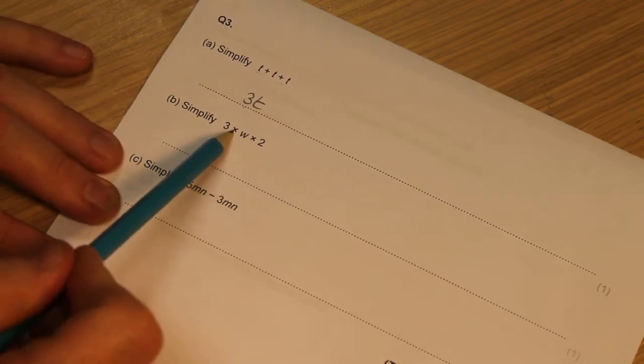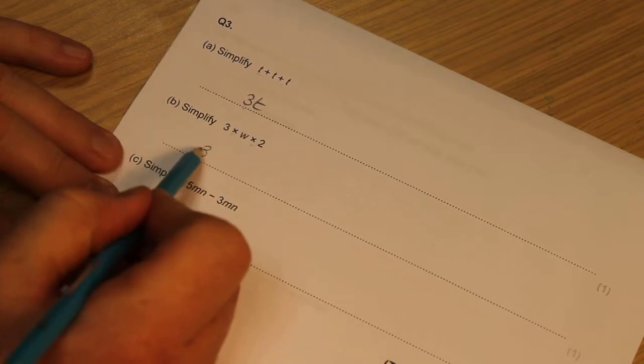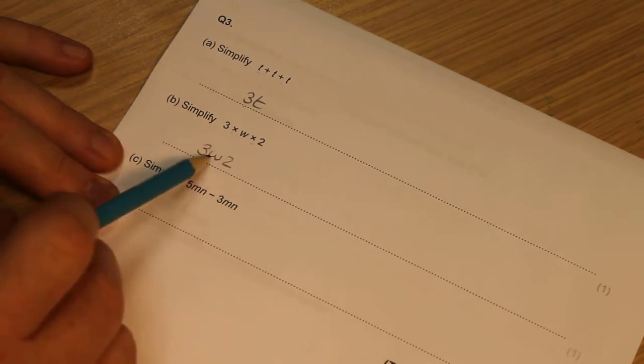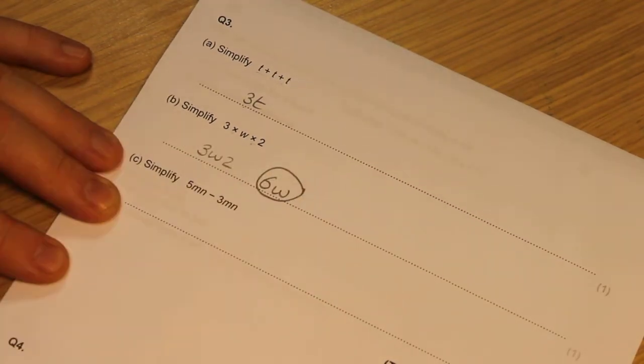You'll remember that when we times algebra together, we can get rid of those, and I've indicated before that there's a temptation to write that down, but actually what I need to do is to times the number bits together, so 3 times 2 is 6w, and that is my solution.